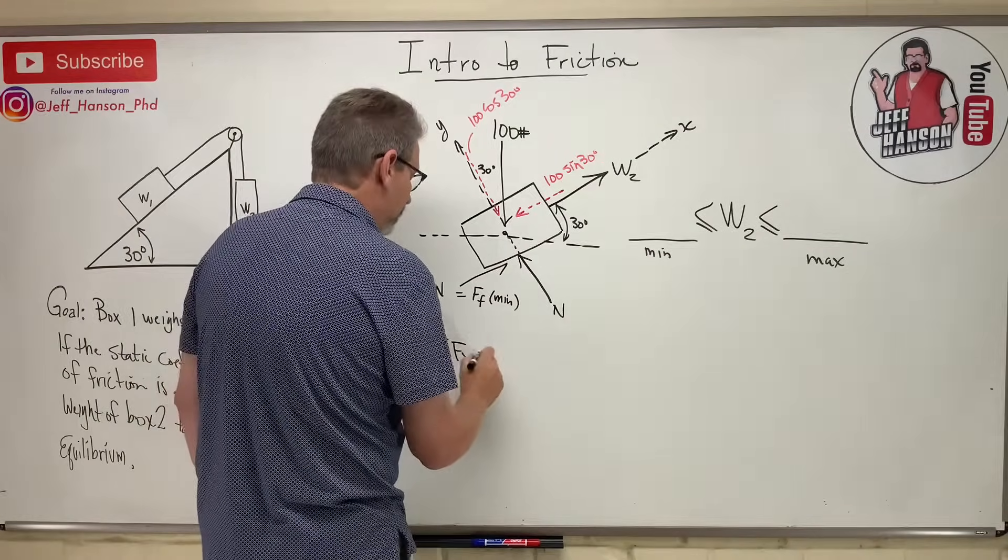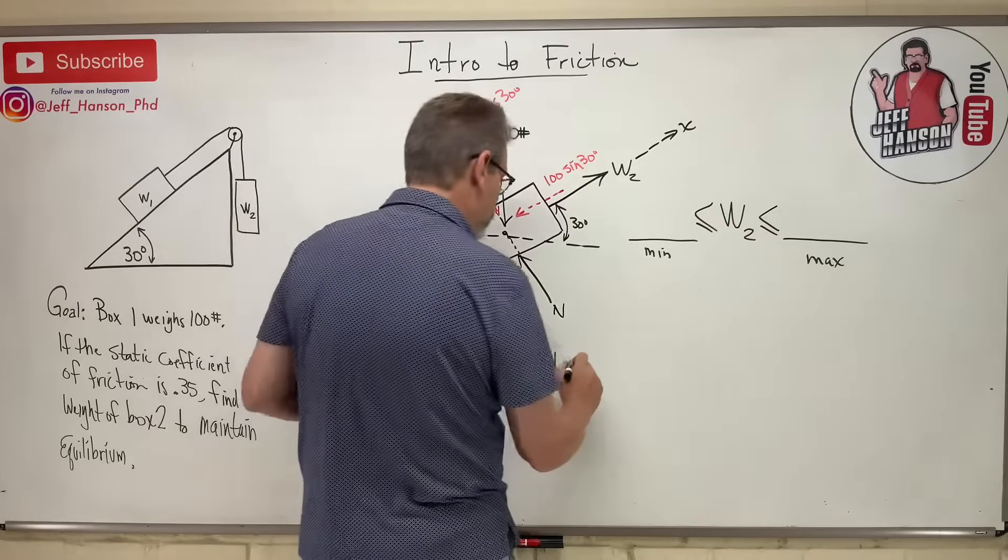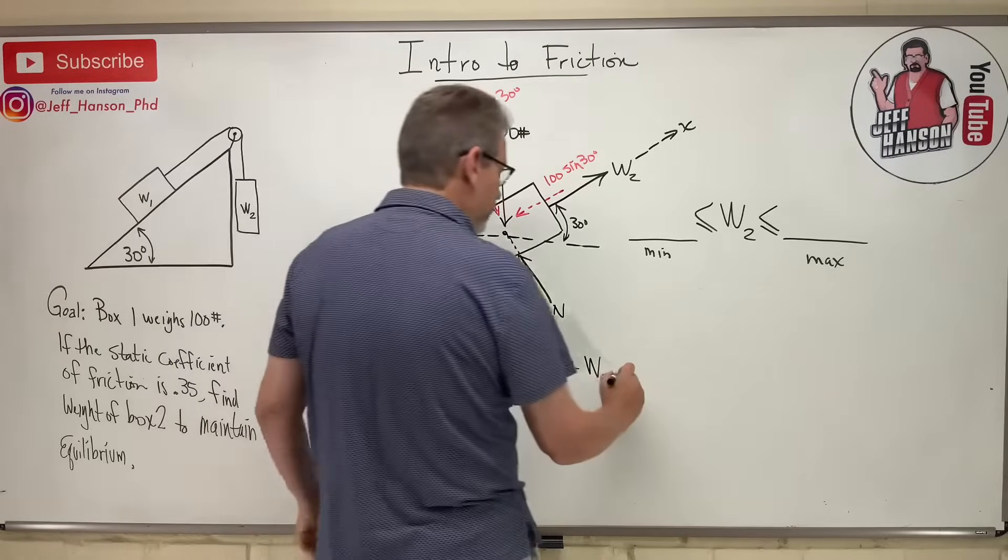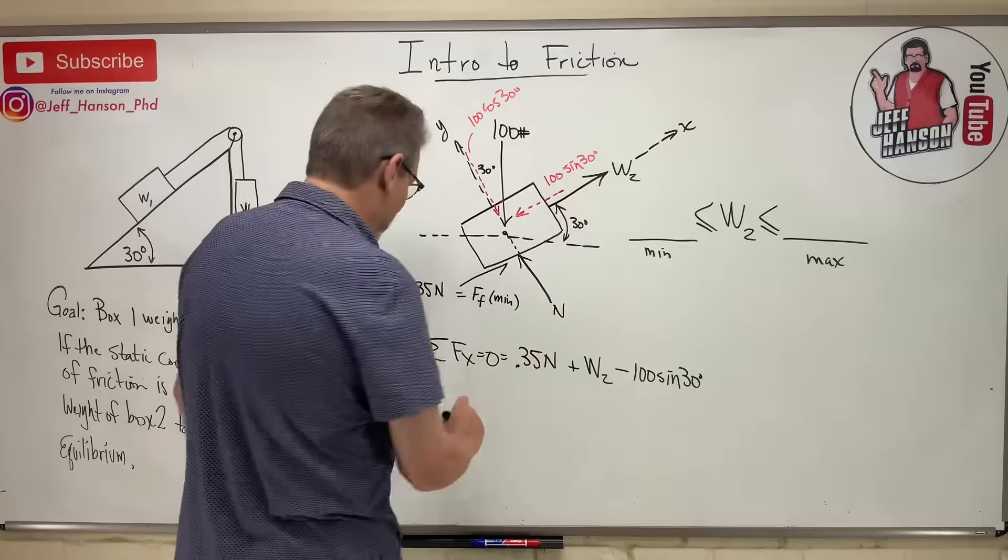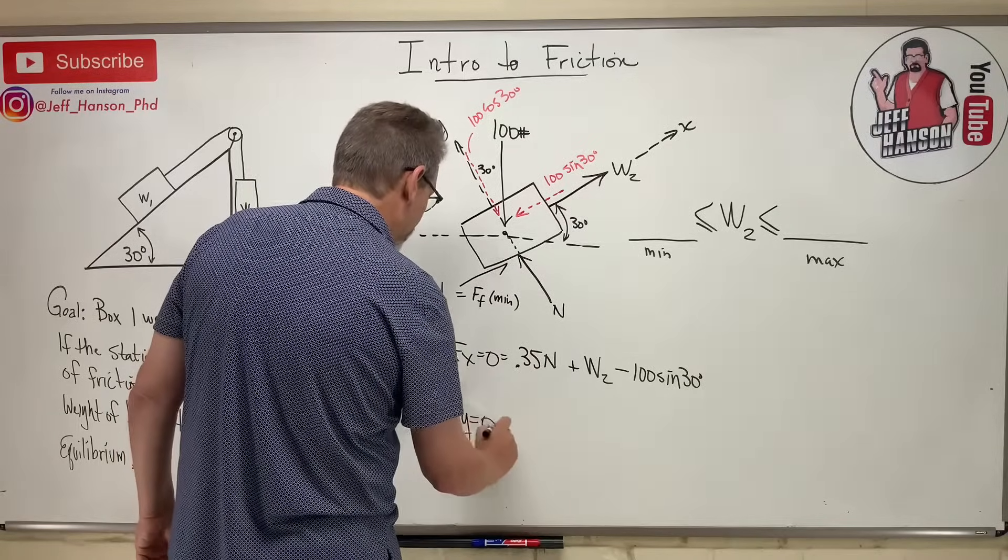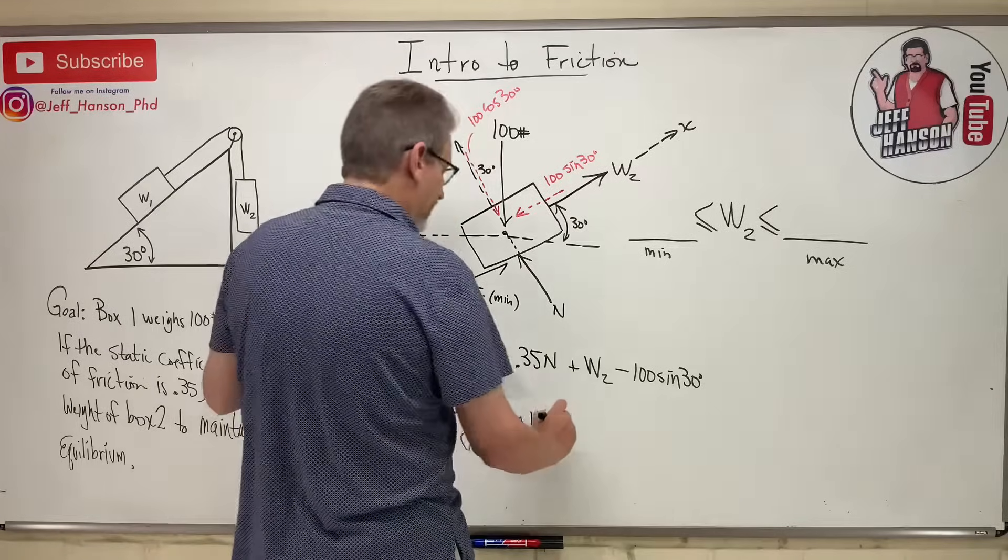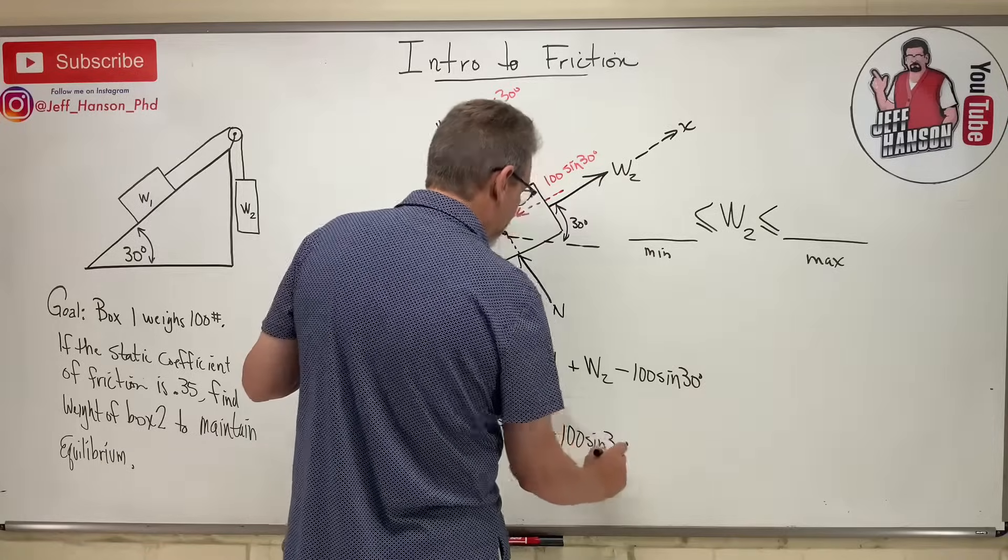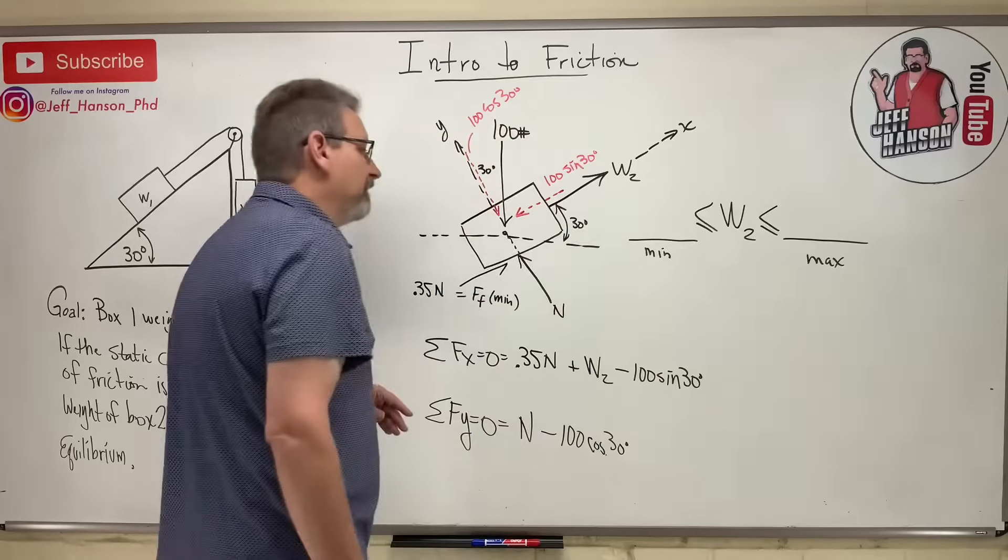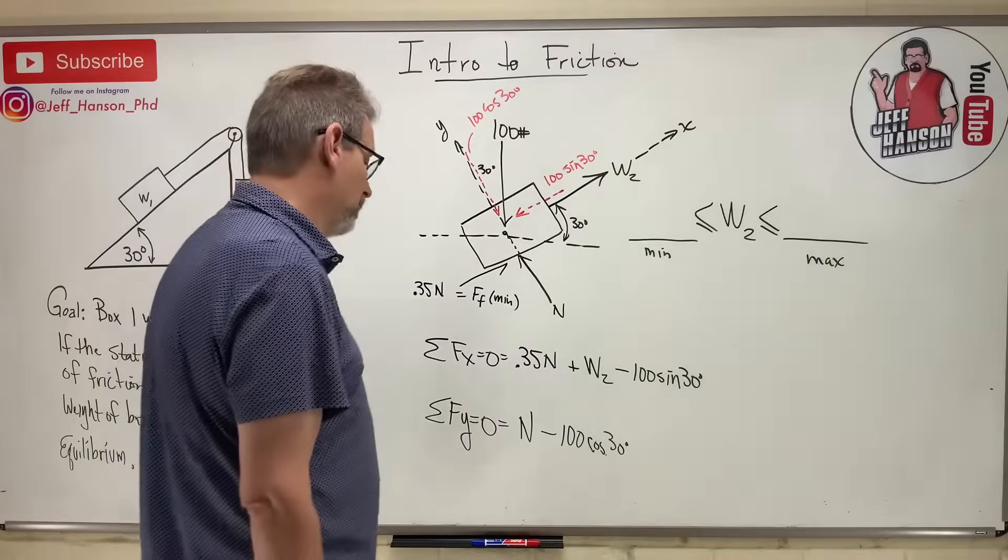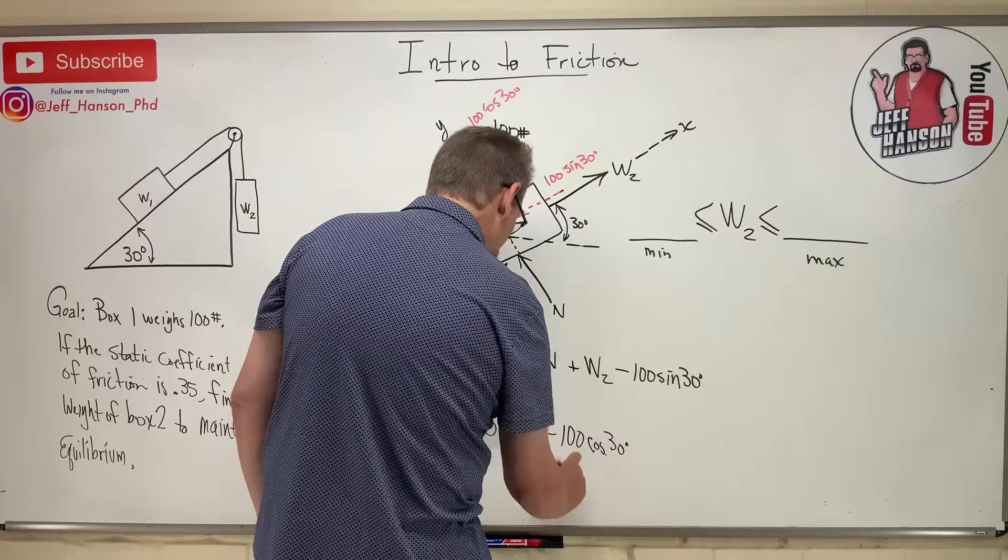So here we go. Sum of the forces in the x. What do I have in the x direction? I've got a positive 0.35 N. I've got a positive W2 and I've got a negative 100 sine 30. Well, that's got two unknowns. I can't solve that. Let's keep going. Here's sum of the forces in the y. And in the y, I have N going uphill. I have this guy going downhill minus 100 cosine 30. And then anything else in the y direction? No. So the cosine of 30 is 0.866. So N is equal to 86.6 pounds.